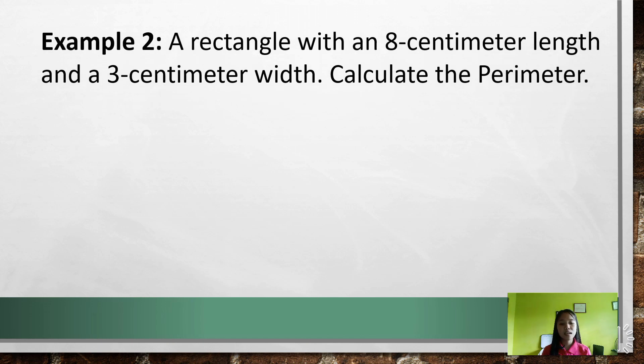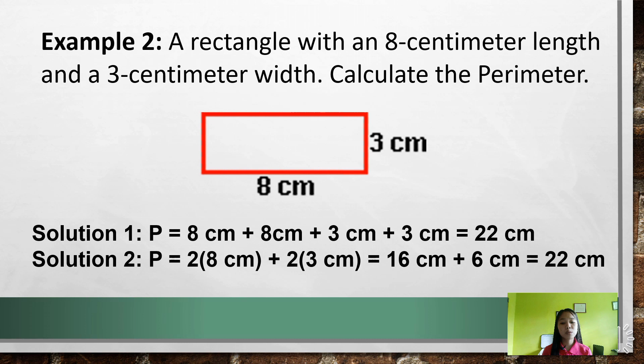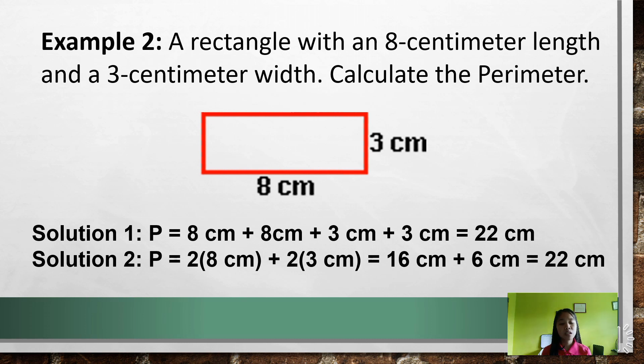Next is example number two. A rectangle with 8 centimeters length and 3 centimeters width, calculate the perimeter. Now we have two solutions to be used here. For solution number one, we'll have P equals 8 cm + 8 cm + 3 cm + 3 cm, which equals 22 centimeters.